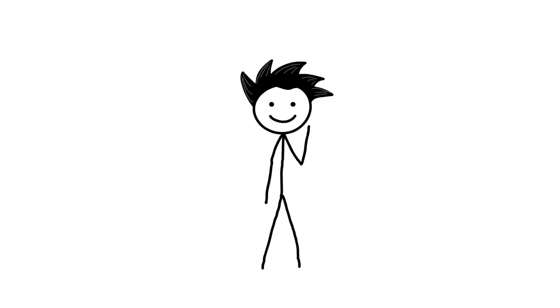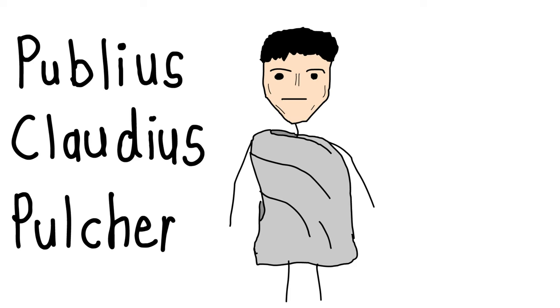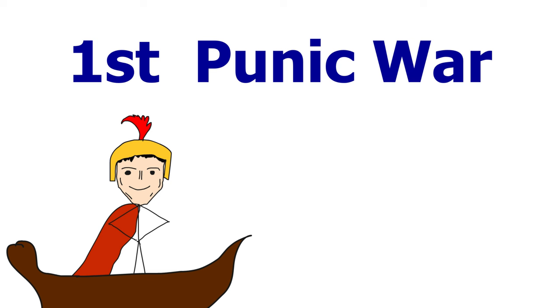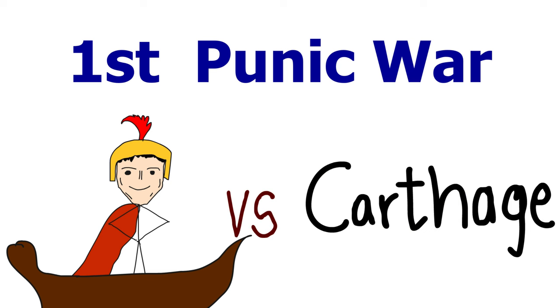But there was someone who had the guts to deny the authority of the sacred chicken. He was a commander, Publius Claudius Pulcher. During the First Punic War in 249 BC, Pulcher was in command of the Roman fleet and was preparing for the naval battle in war against the Carthage.